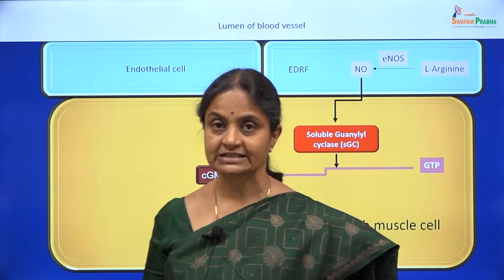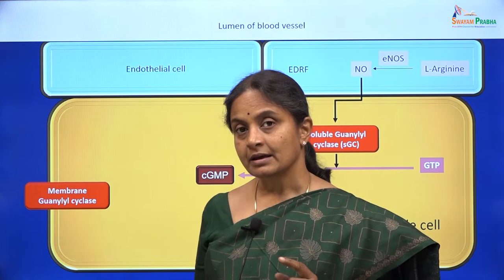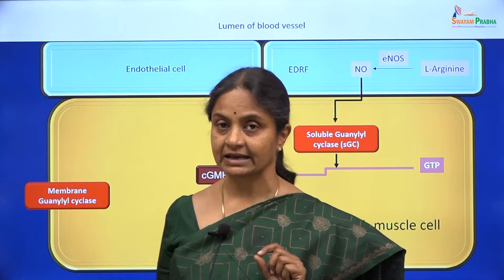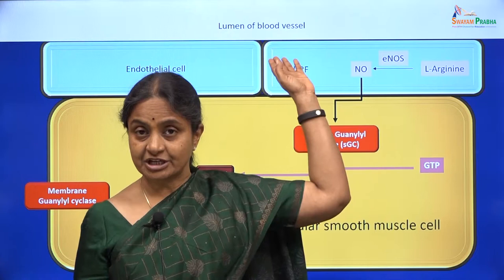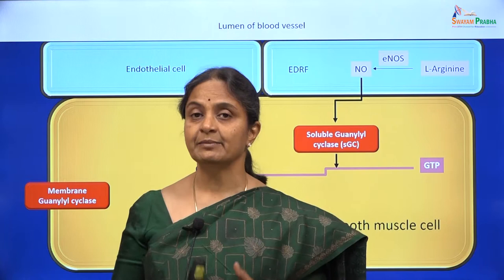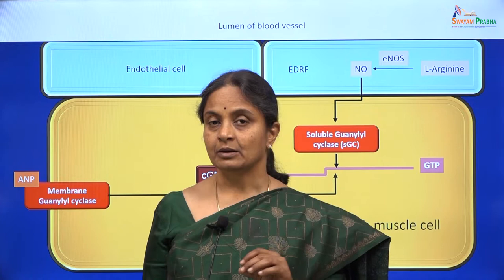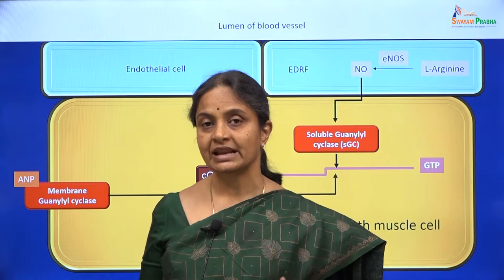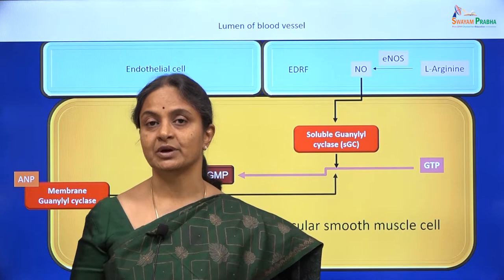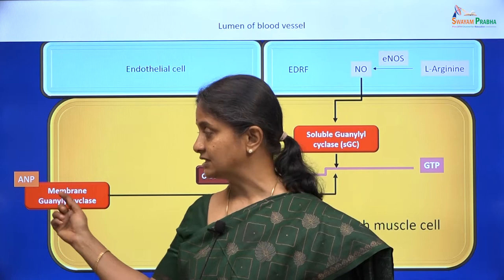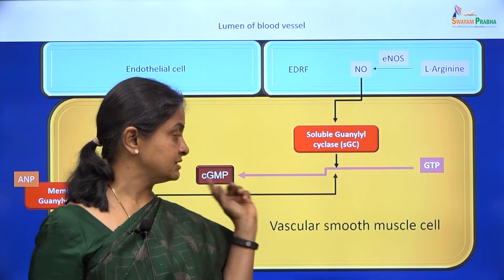There are other ways in which cGMP levels can increase in the vascular smooth muscle cell, and that is by activation of the membrane guanylyl cyclase. Just as we had a membrane adenylyl cyclase, there is a membrane guanylyl cyclase as well. While adenylyl cyclase was activated by G proteins, membrane guanylyl cyclase is activated directly by the ligand. The ligand in this case is atrial natriuretic peptide, a hormone secreted by the endocardial cells of the atria, which induces relaxation of blood vessels by binding to and directly activating the membrane guanylyl cyclase, thereby increasing cGMP levels within the cell.